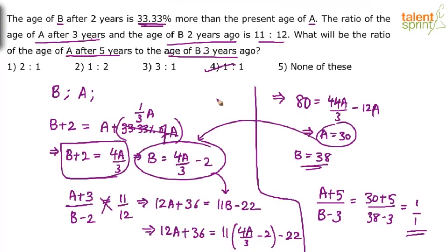Pallavi has got a query. Why is it A plus 33% of A? Pallavi, I think you need to go back and watch the videos once. The age of B after 2 years is 33.33% more than the present age of A. It is 33.33% more than A. So A plus 33.33% of A. Suppose the statement says age of B after 2 years is 33% of A. Then we will directly write B plus 2 equal to 33.33% of A. Then we will not take A plus. Here, why have we taken A plus? Because it says it is 33.33% more than the present age of A.